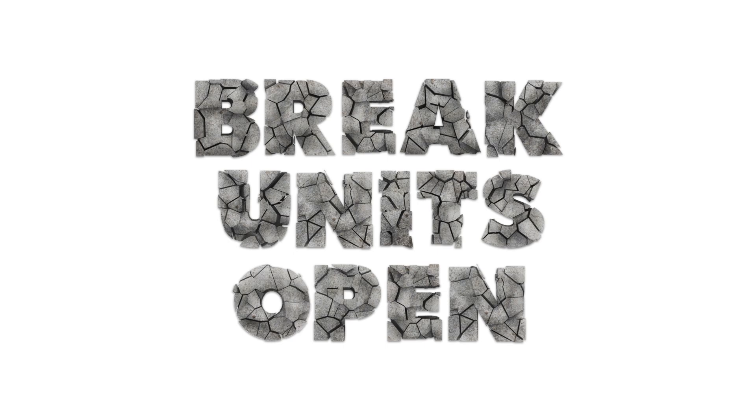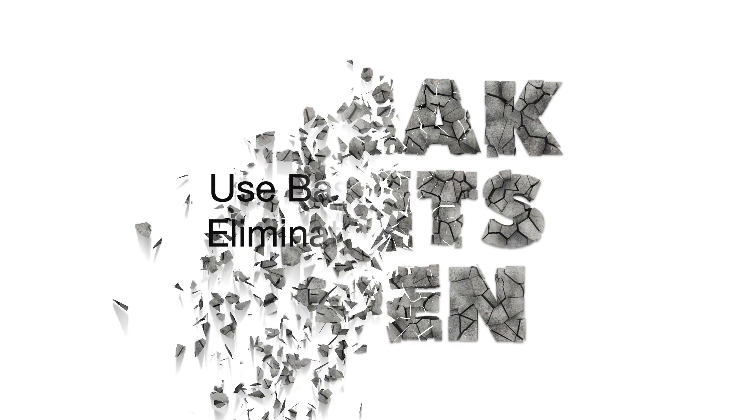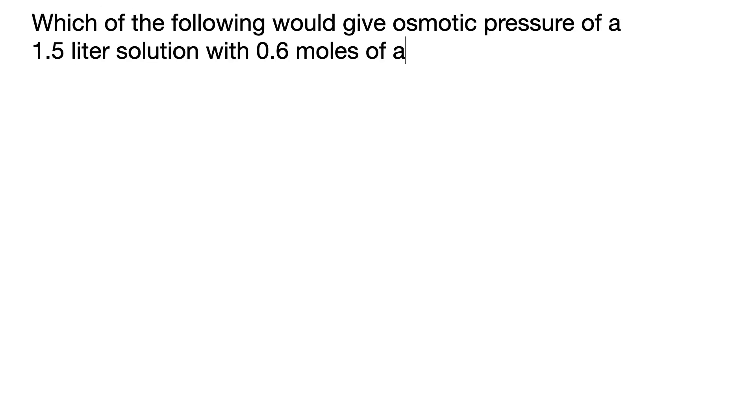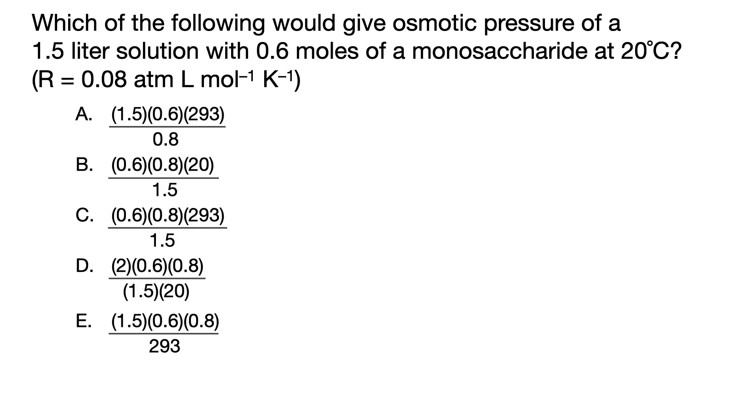So instead of wasting time trying to recall formulas on DAT, break units open and use them to quickly and easily eliminate answer choices. Here's an example of a characteristic natural sciences chemistry question where you can easily use units to eliminate four of the answer choices.